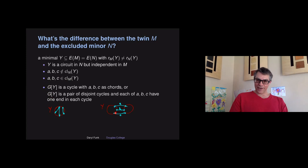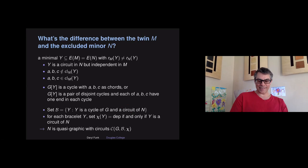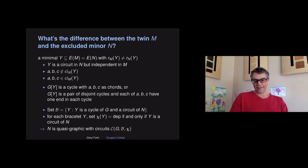This looks pretty quasi-graphic now. The set Y is independent in the twin but a circuit in the excluded minor — it's a dependent bracelet. Just set curly B to be all those sets Y where Y is a cycle in G and a circuit of N, because this has to hold for every set Y that has different ranks in N and M. For every bracelet you see, take the bracelet function to be assigning dependent if and only if Y is actually a circuit in your excluded minor. Immediately via our previous work about the structure of circuits in quasi-graphic frameworks, we get that our excluded minor is quasi-graphic, with its collection of circuits determined by the bias graph along with this bracelet function.